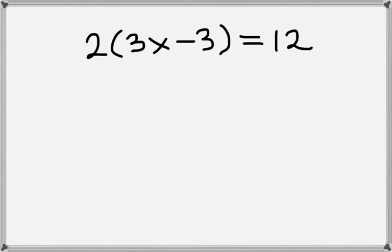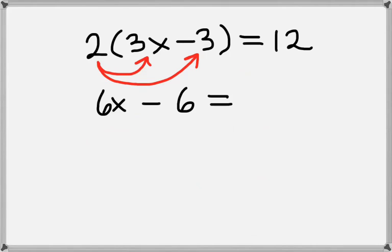We want to distribute again to get rid of the parentheses, so we're going to take 2 times 3x. That gives us 6x, and then 2 times minus 3, which will give us minus 6. On the right-hand side, we just still have 12.